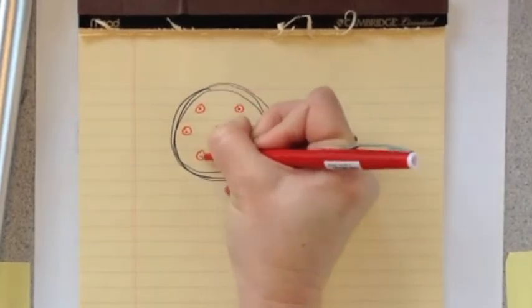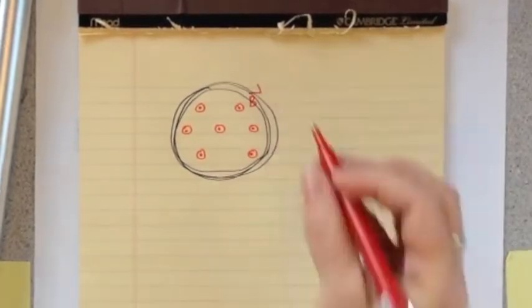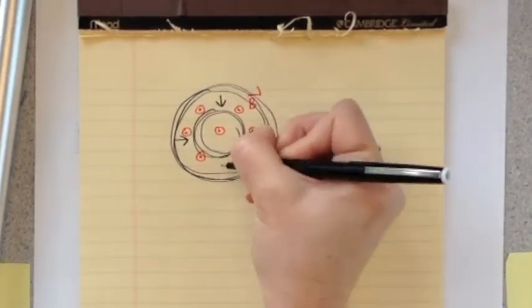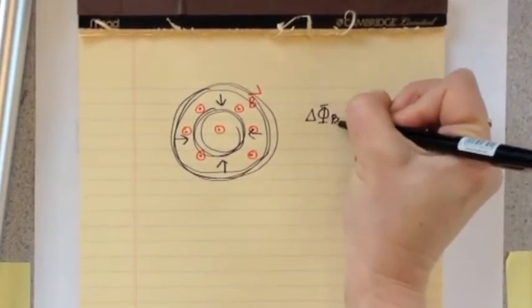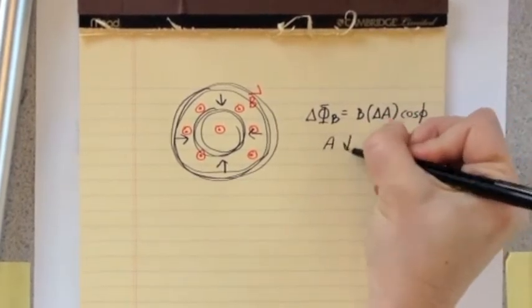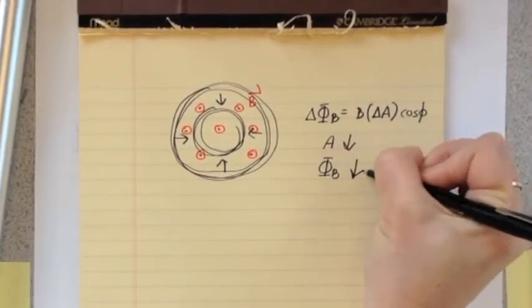The next possibility would be to change the size of the coil, either increase or decrease its area. This, too, would induce a current in the coil, which would, in turn, create an induced magnetic field, which would counter the change in flux.